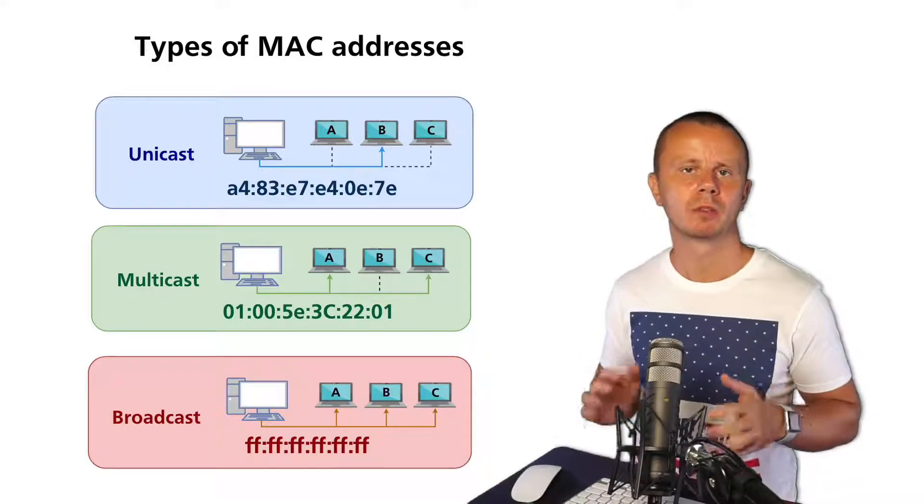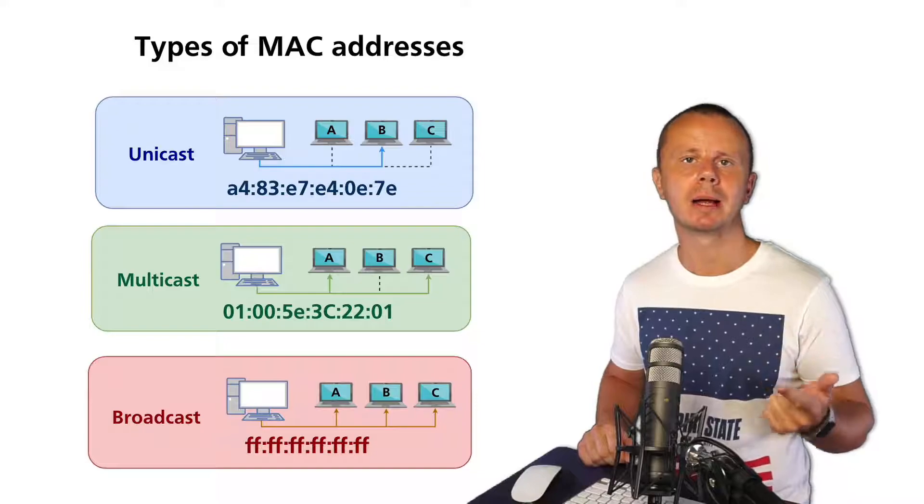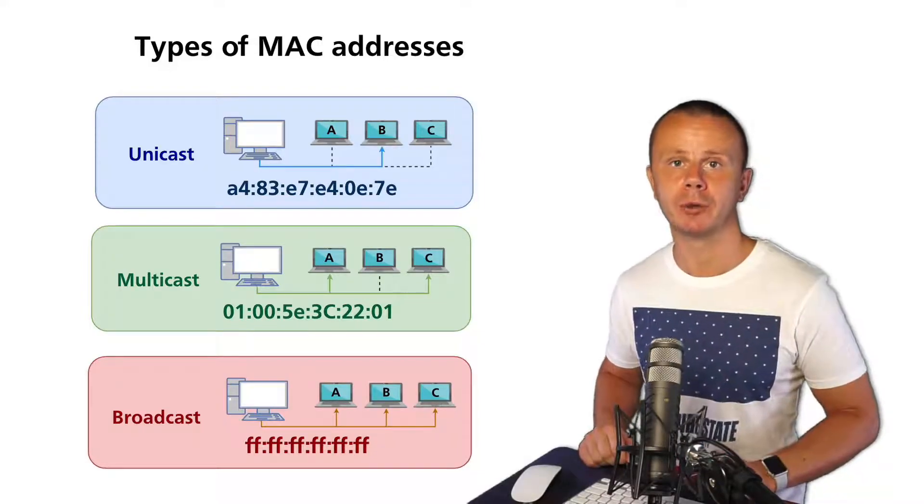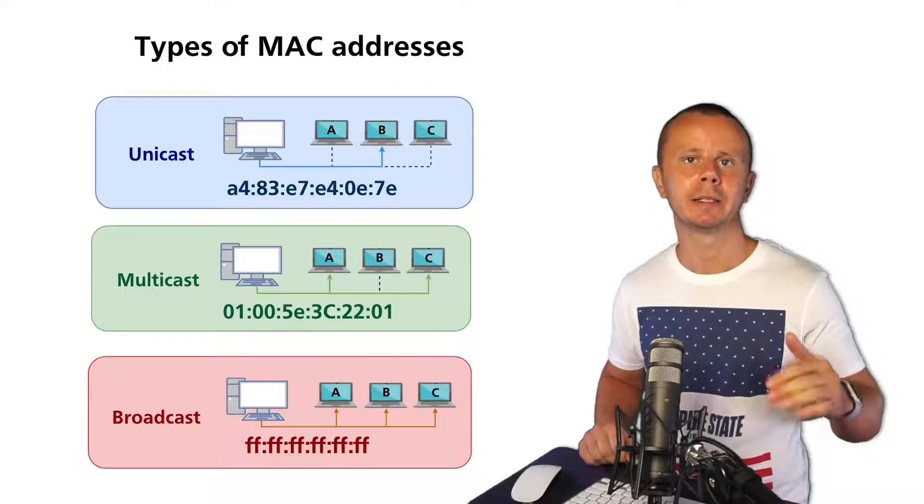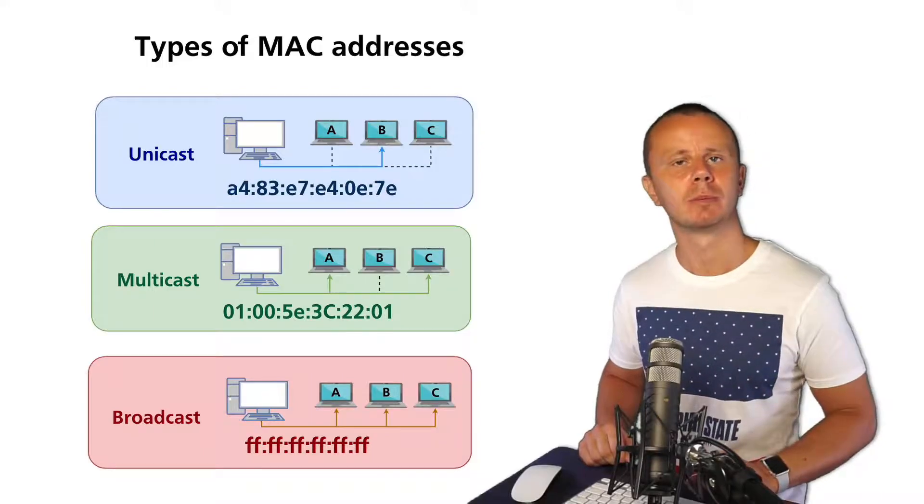Following the previous lecture where we talked about three different types of communication like unicast, multicast, and broadcast, let's talk about three different types of MAC addresses that are used on the data link layer of the TCP/IP model: unicast, multicast, and broadcast.